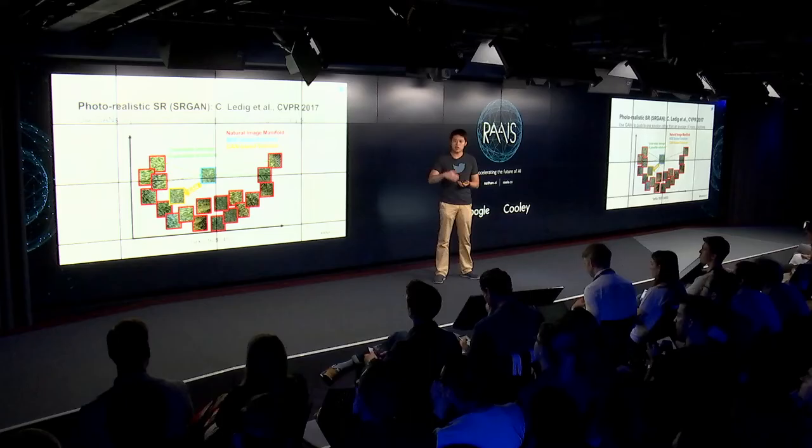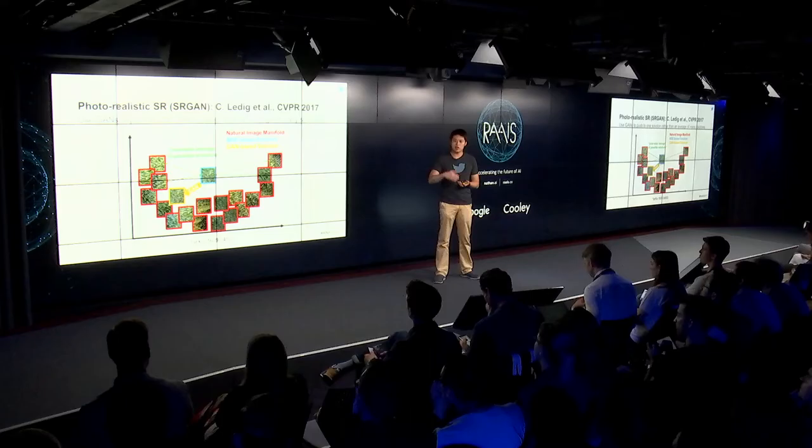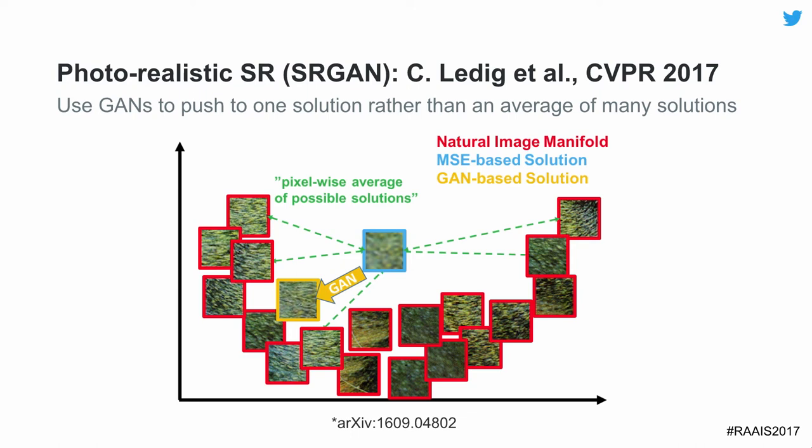What this means is that whereas before, training a single network just minimizes the PSNR and ends up taking the average of all possible results — giving you an average of all good solutions rather than one good solution — the GAN adversarial approach pushes the result into the manifold of natural images. It may not be the exact solution, but it is far more likely to be perceived as correct than just taking an average of all possible solutions.